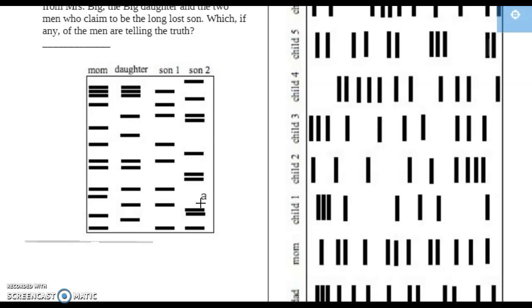Okay, so is anybody telling the truth? Does anybody have bands from both Mom and Dad? And it doesn't really appear like they might. So like Son 2 has this one that would not have come from Mom, and we don't know for sure about Dad because we don't have Dad's DNA. So we can't really tell for sure. They both look a little suspicious, that they may not be the offspring. And unless you have Dad, you can't really make a definite decision. But it appears that neither would be the son.